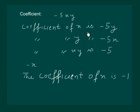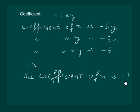So the coefficient of x in -5xy is -5y. Similarly, if we are talking about the coefficient of y, then excluding y, the remaining factors give us -5x as the coefficient of y. In the example -x, if we exclude x we are left with -1, hence -1 is the coefficient of x.